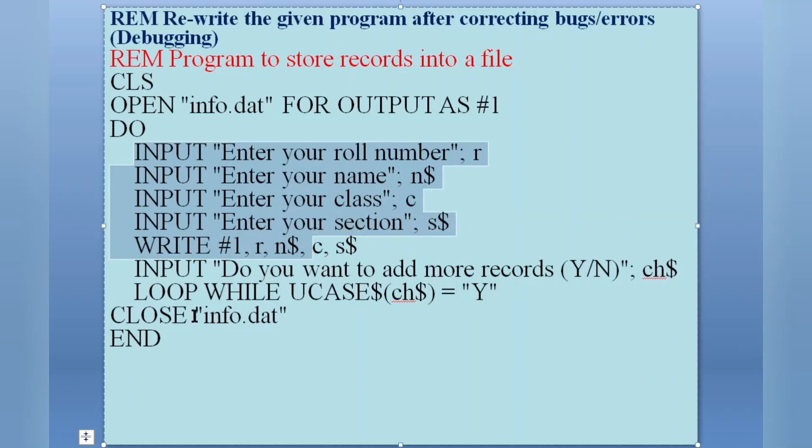After that, we need to close the file. So to close the file, we have written here CLOSE info.dat. But this is not the correct syntax to close the file. We need to use #1. #1 represents this info.dat. So here we need to write #1, and this program is correct now.